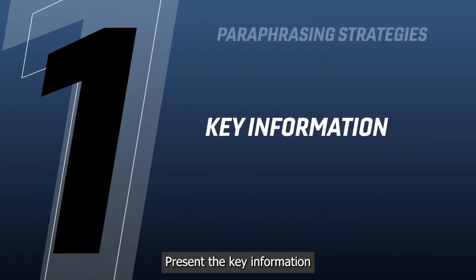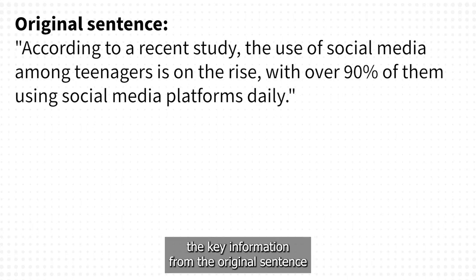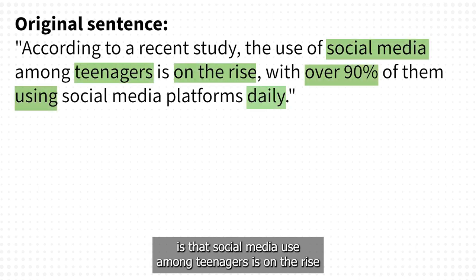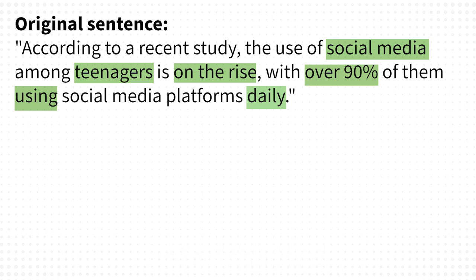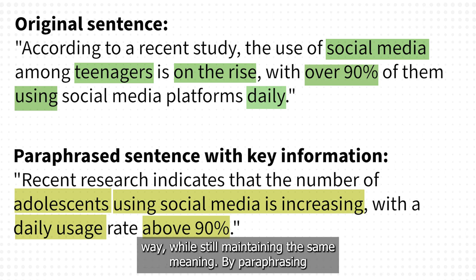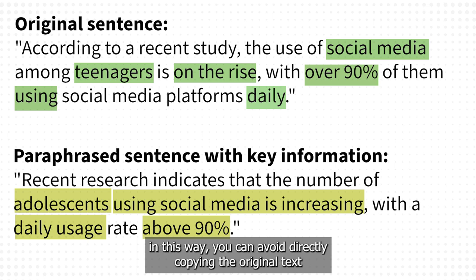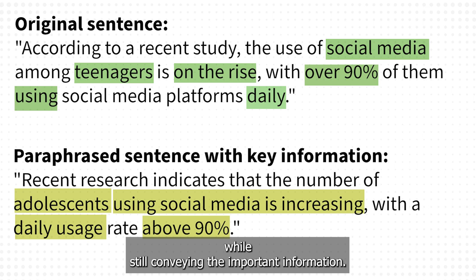Present the key information. In this example, the key information from the original sentence is that social media use among teenagers is on the rise and that over 90% of teenagers use social media daily. The paraphrased sentence presents this information in a slightly different way while still maintaining the same meaning. By paraphrasing in this way, you can avoid directly copying the original text while still conveying the important information.